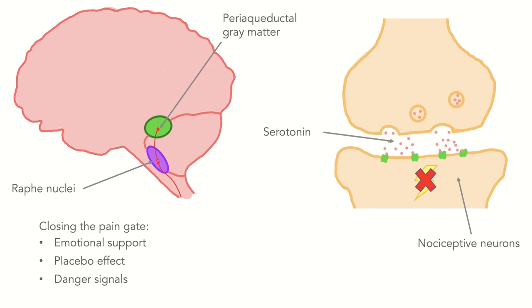Interesting to notice hereby, that just as emotional support, the placebo effect or danger signals can close the gate for pain perception, this gate can also be opened by, for example, anxiety, depression or learned safety signals, explaining why pain is so highly subjective.